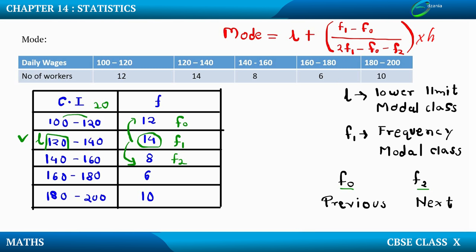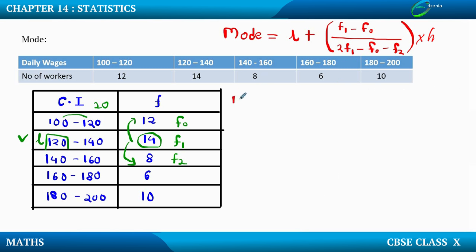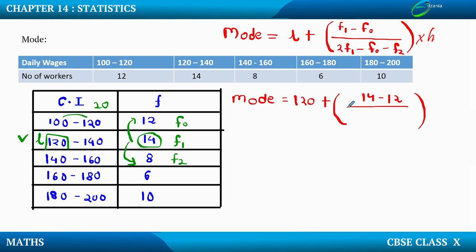We are just supposed to substitute the values. So MODE equals L, that is 120, plus (F1 minus F0) which is 14 minus 12, upon 2F1 that is 2 into 14, minus F0 that is minus 12, minus F2 that is minus 8, into H that is into 20.